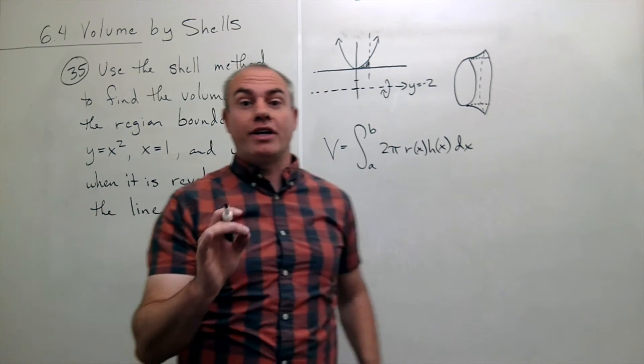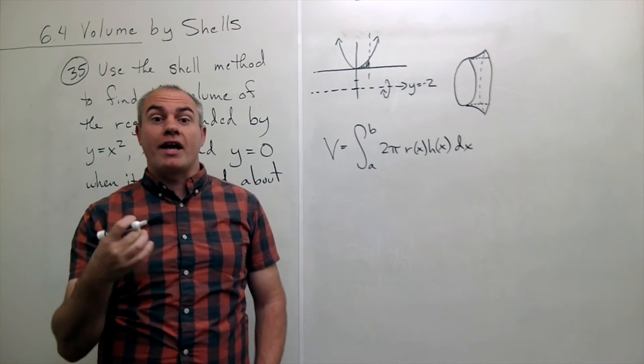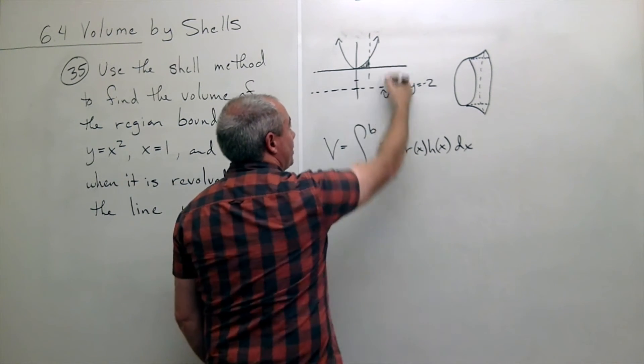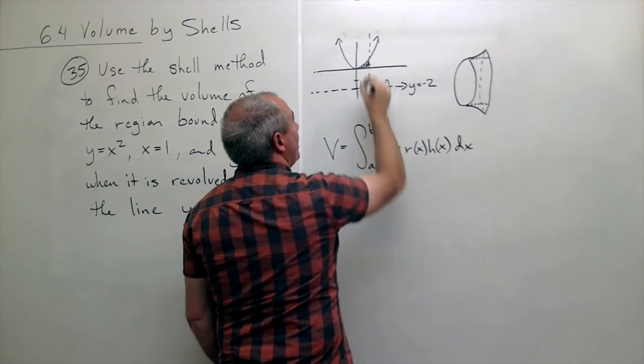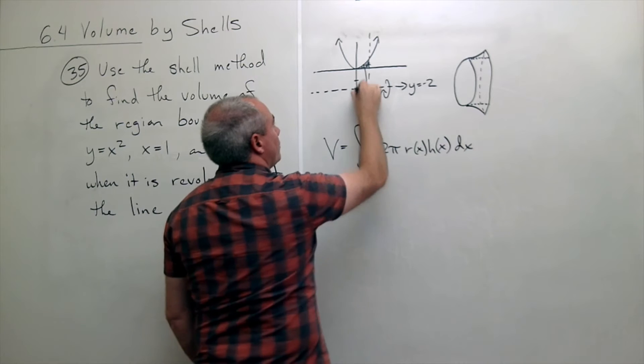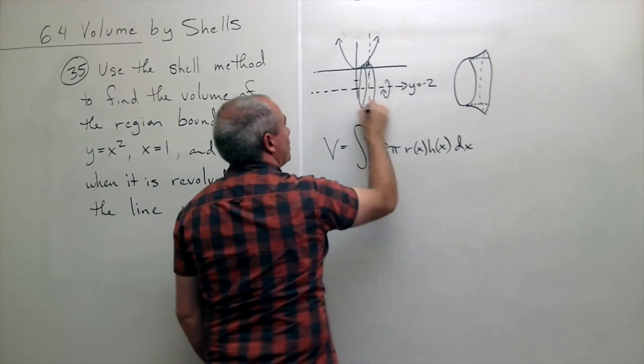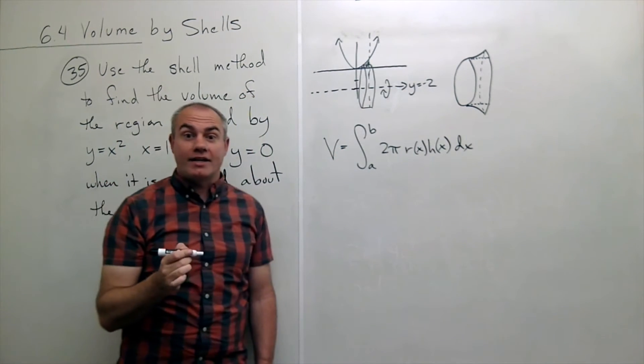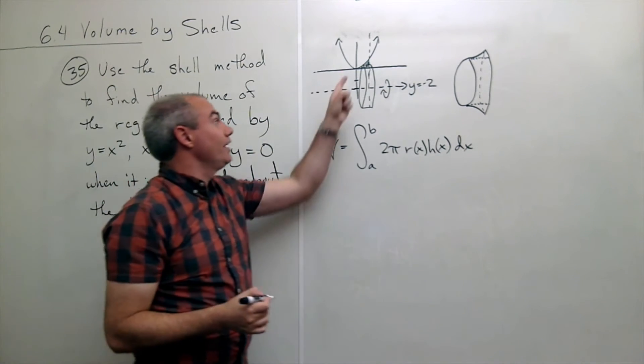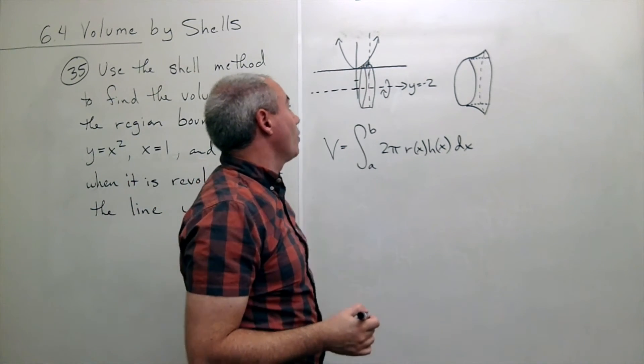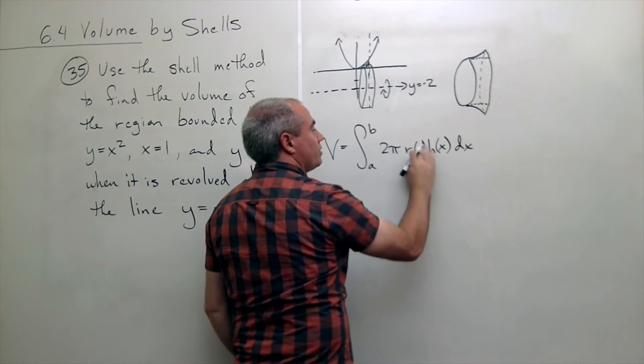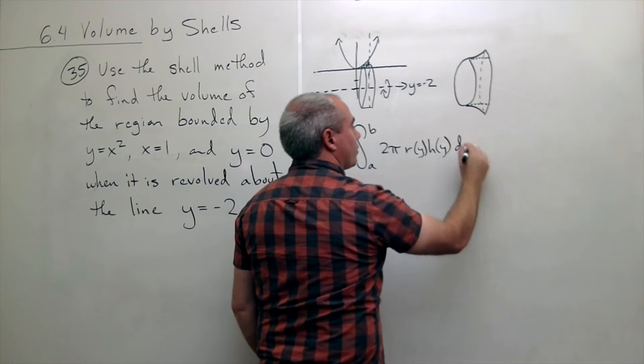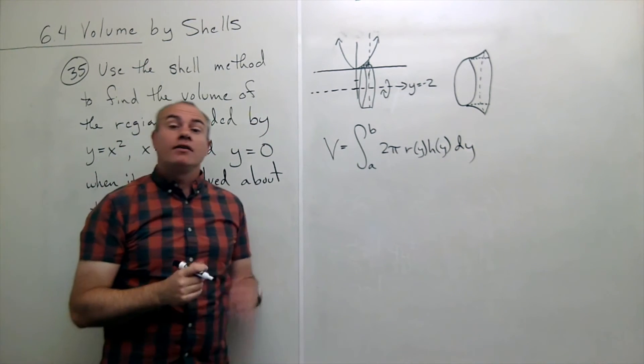We figure that out by looking at a typical slice that would create a shell. Our typical slice that would create a shell in this case, since we're spinning this direction, is we'd have to draw a horizontal slice and that would make us a shell. So a horizontal slice is going to cut the y-axis, not the x-axis. These slices are slicing the y-axis and not the x, so this is going to be a function of y, this is going to be a function of y, and I'm integrating with respect to y.